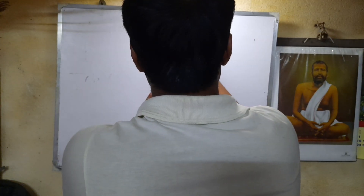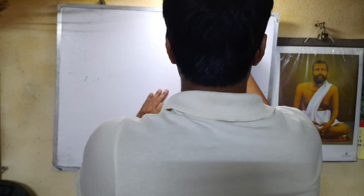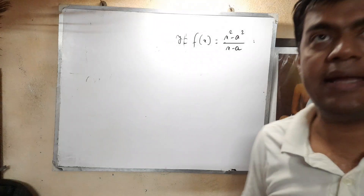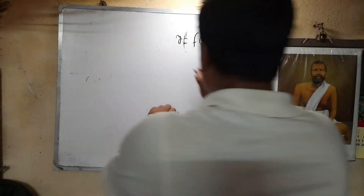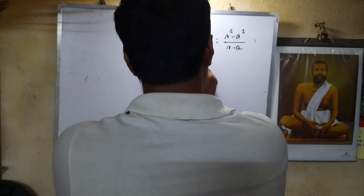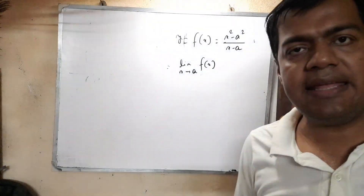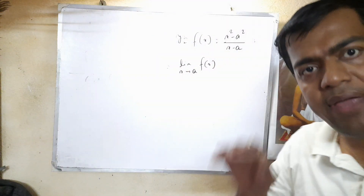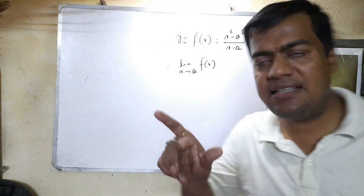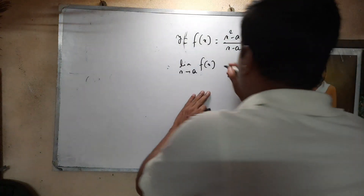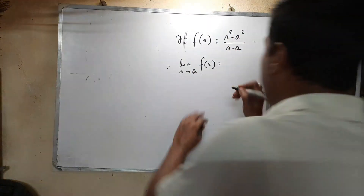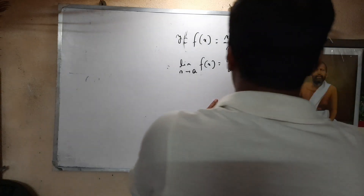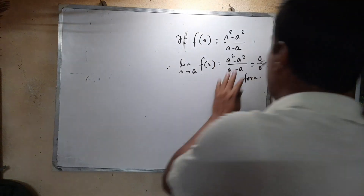Consider y = f(x) = (x² - a²)/(x - a). Therefore, limit as x tends to a of f(x): if we directly put x = a, we get (a² - a²)/(a - a) = 0/0, which is of indeterminate form. This limit cannot be directly evaluated.